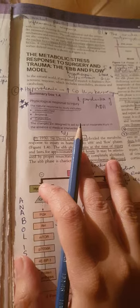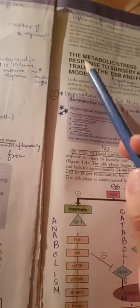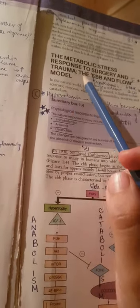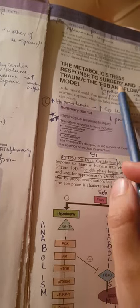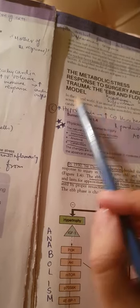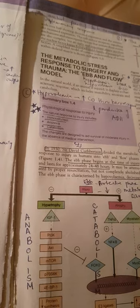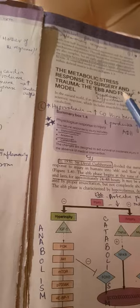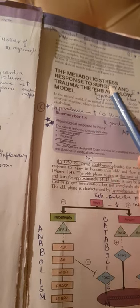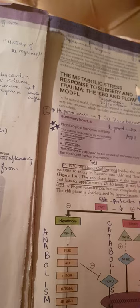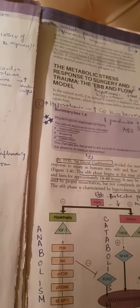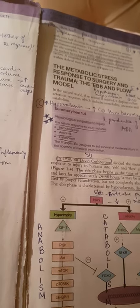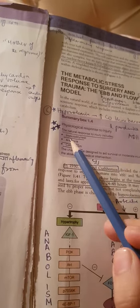The next part of this chapter is the metabolic stress response to surgery and trauma, the ebb and flow model. This is the crux of the whole chapter - what happens when the body undergoes trauma or surgery. In the animal world or in nature, the natural response to injury includes immobility or arrest followed by anorexia and catabolism.